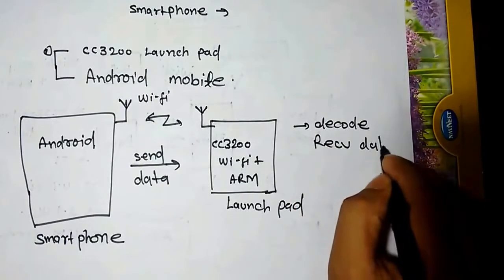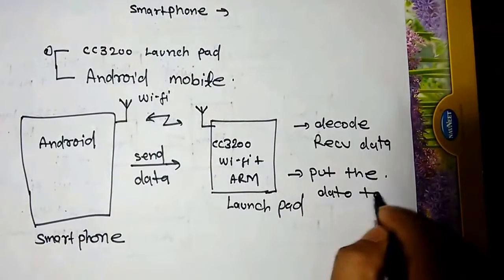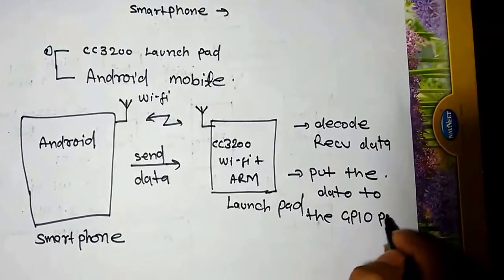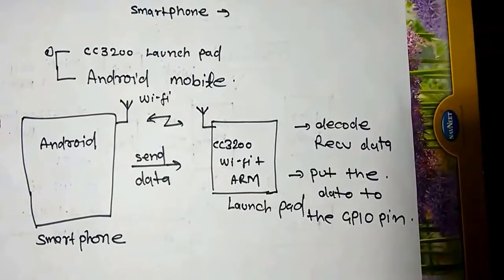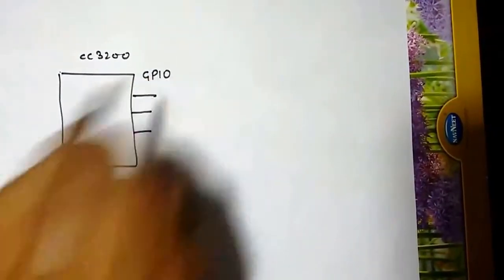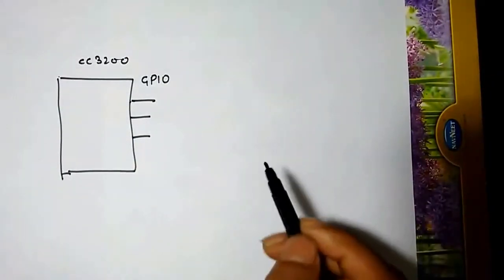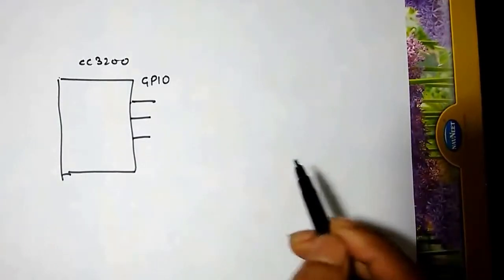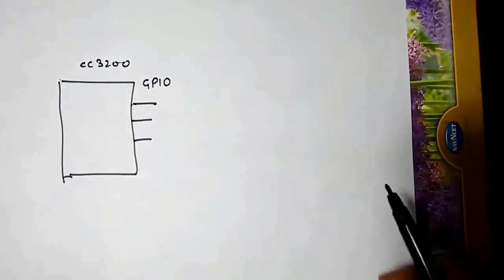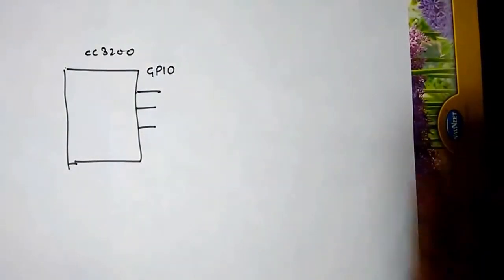The launchpad will receive through Wi-Fi that data and then it will decode that data, receive the data, and then put the data to the GPIO pin. After putting the GPIO pin, then it will control your bulb, AC and all other things. After decoding the data on your CC3200 launchpad it will give the data to your GPIO. At the GPIO pins you can connect this GPIO to your devices. But remember, this GPIO cannot directly connect to your system because your system needs a lot of current and the GPIO of your microcontroller pin cannot provide sufficient current to the devices.